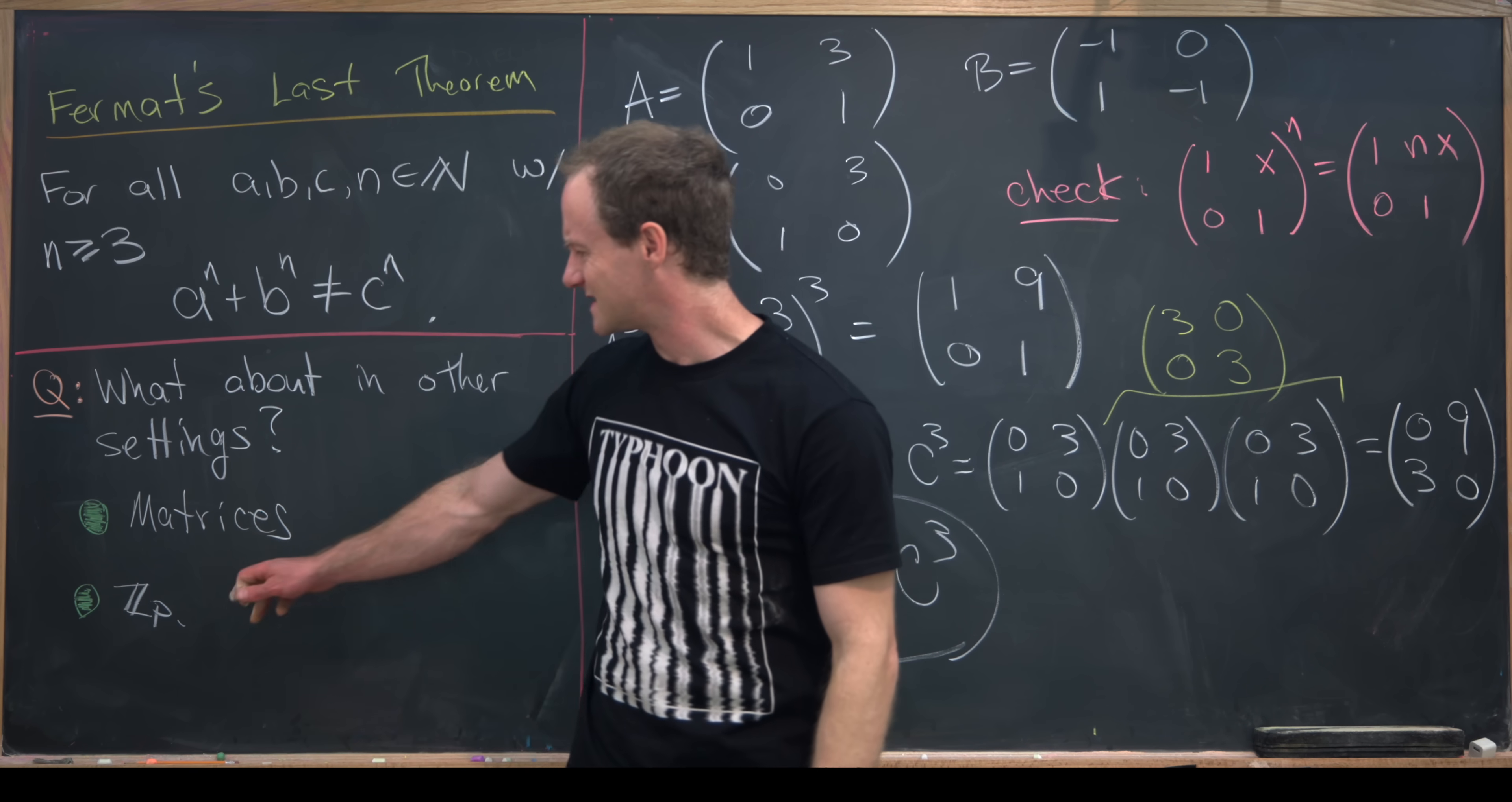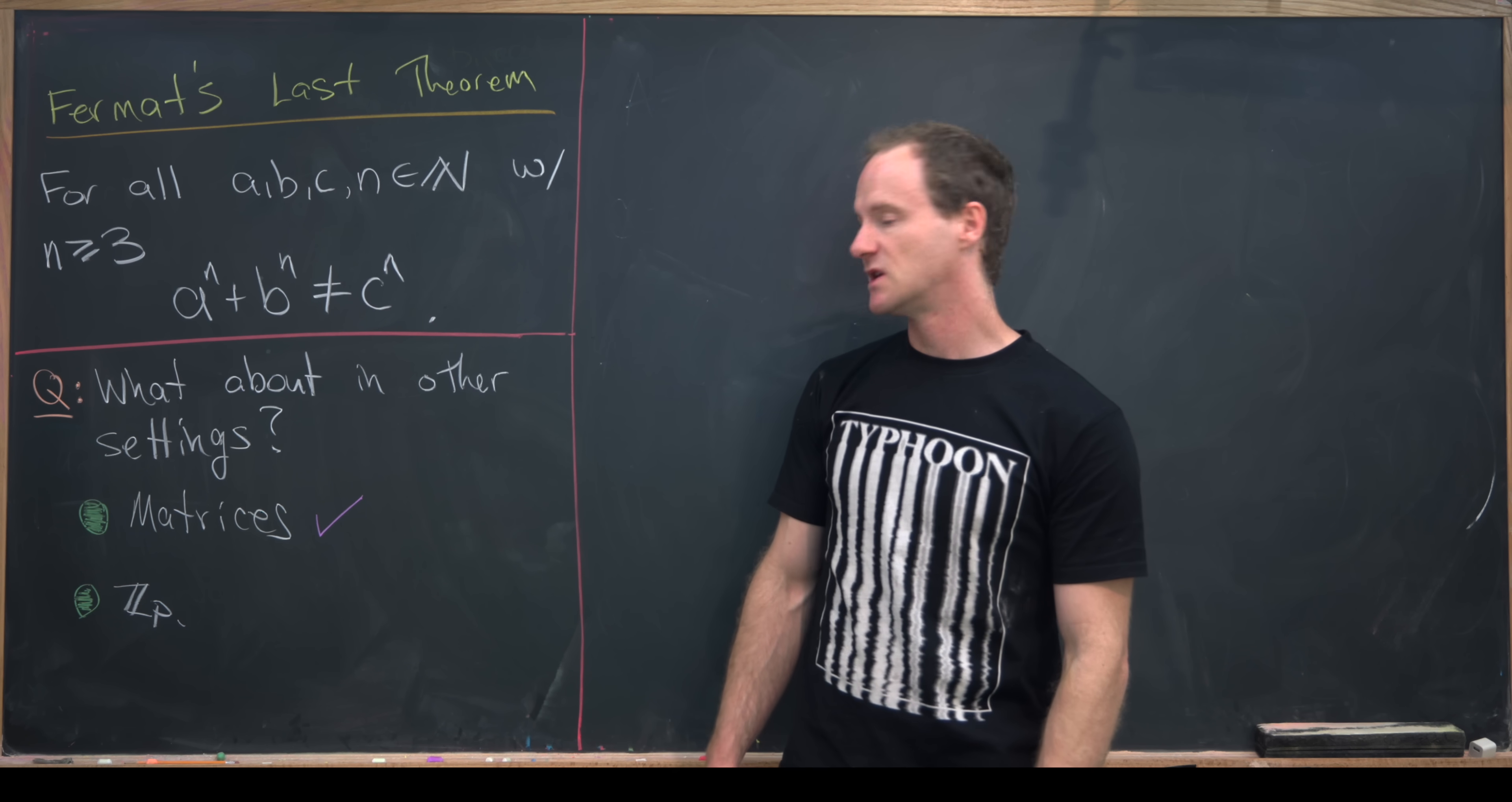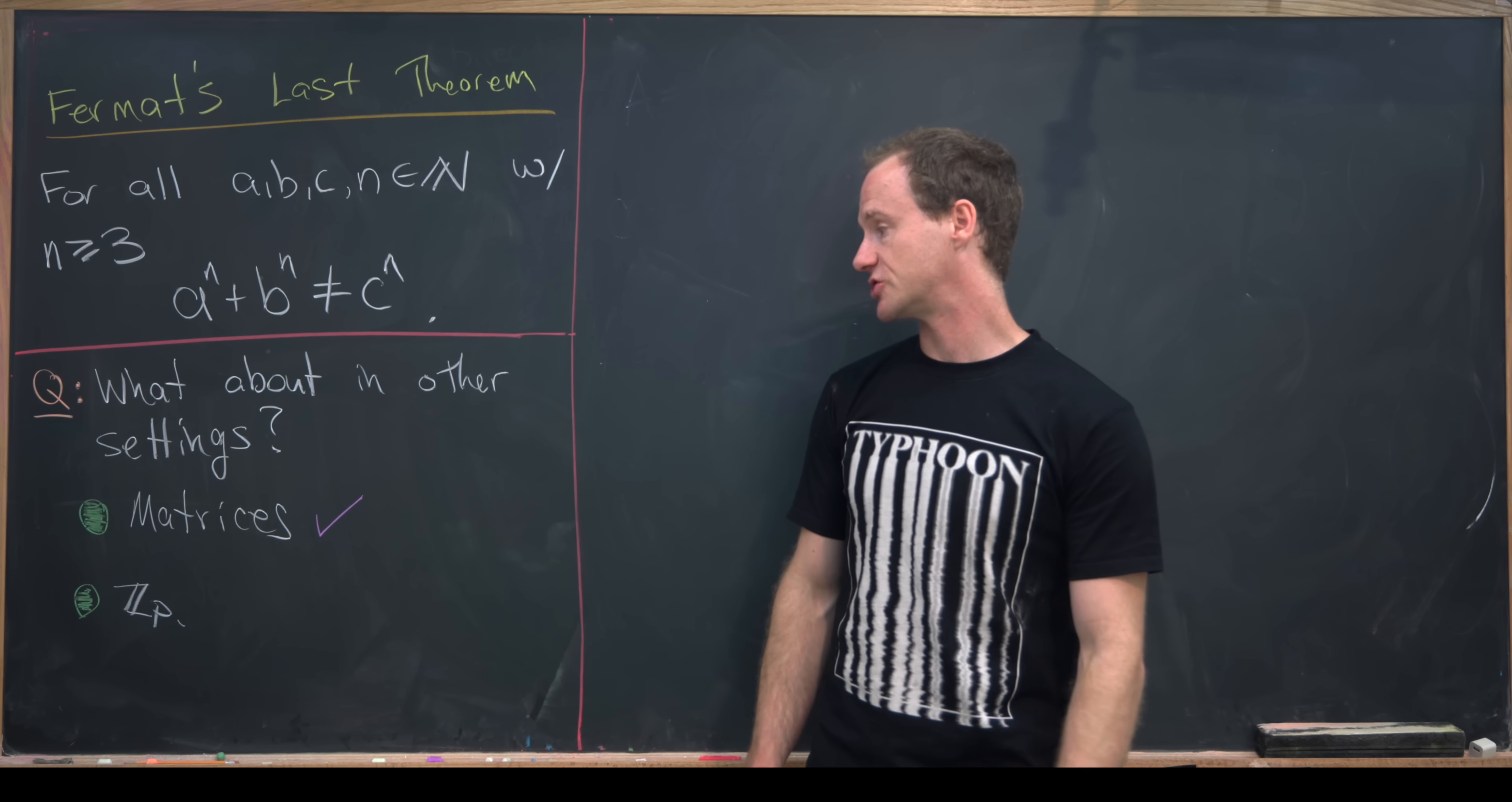Let's get rid of this, and then we'll look at this ZP example, which admittedly is a bit of a cheat. So we just presented an example of three matrices with integer entries that satisfy the equation A cubed plus B cubed equals C cubed, which is not possible just over the standard integers.